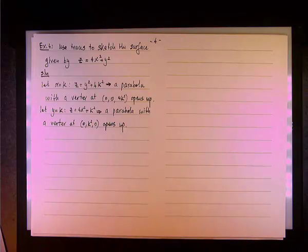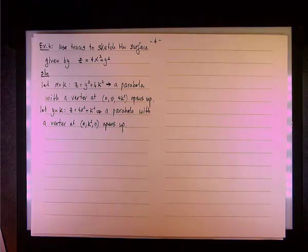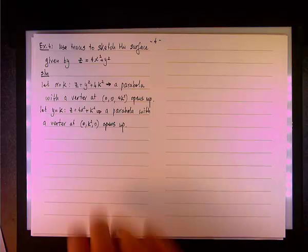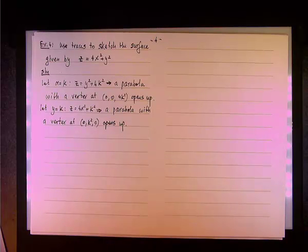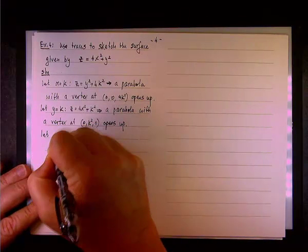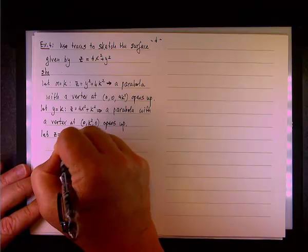Since two of the three traces are parabola, what we have is something that is called paraboloid. But we need to have an adjective. The adjective will be determined by the third trace.